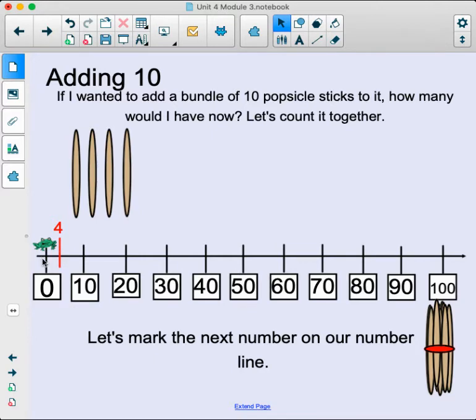Notice it's not really halfway. It's a little closer to the 0 because halfway to 10 would be 5. Okay, if I wanted to add a bundle of 10 popsicle sticks to it, how many would I have now? Let's count together.